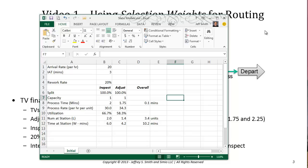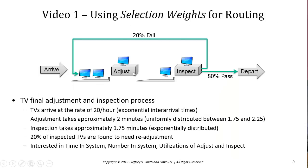What we haven't considered yet is the effect of this failure rate. In effect, when TVs come in for inspection, some proportion fail, and so what the adjustment station sees is an arrival rate higher than the nominal 20 per hour. We have to account for the fact that entities have reentrant flow. If the adjustment station is stable and can handle all arrivals from outside plus failures returning from inspection, then the inspection station will also see that same higher arrival rate.